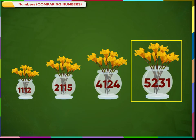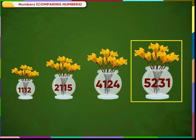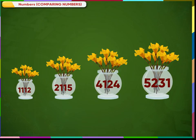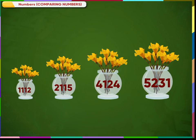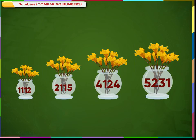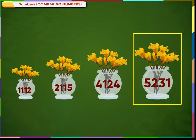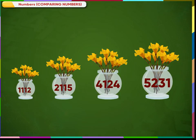And at last, the pot with number 5231. Here, the number 1112 is the smallest and the number 5231 is the largest. So remember, increasing order means arranging anything from smallest to largest.